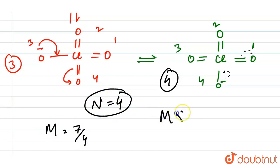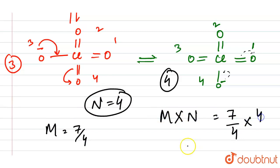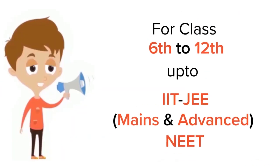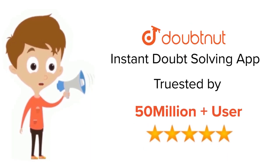We have n equals 4 and m equals 7/4. The answer is m cross n, which is 7/4 into 4, giving us 7. So our final answer is 7. Thank you. For class 6 to 12, IIT JEE and NEET level, trusted by more than 5 crore students — download DoubtNut today.